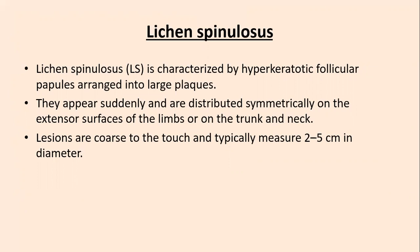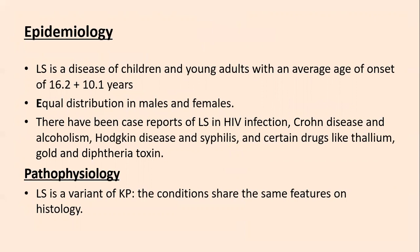The last topic today is lichen spinulosus. It is characterized by hyperkeratotic follicular papules arranged into large plaques — different from KP in that lesions are arranged as large plaques with slightly bigger hyperkeratotic papules. They appear suddenly and distribute symmetrically on the extensor surfaces of limbs, trunk, and neck. Lesions are coarse to touch and typically measure 2–5 cm in diameter. Lichen spinulosus is a disease of children and young adults with an average age of onset of 16.2 years, equally distributed in males and females. Case reports exist in HIV, Crohn's disease, chronic alcoholism, Hodgkin's disease, syphilis, and with drugs such as thallium, gold, and diphtheria toxin.